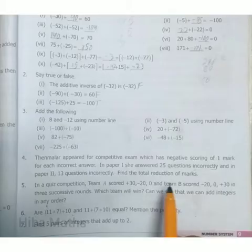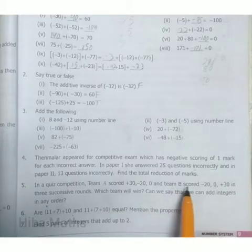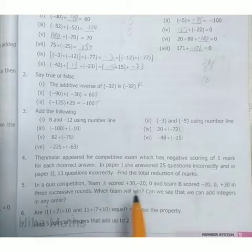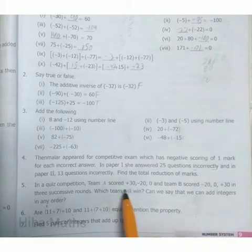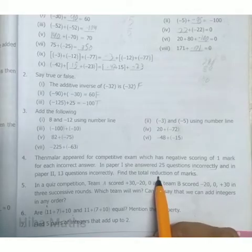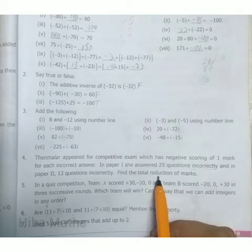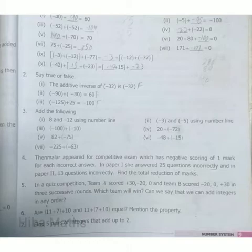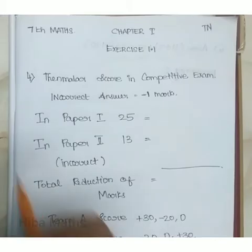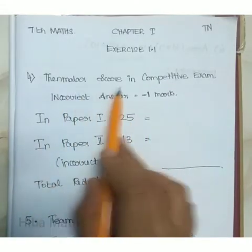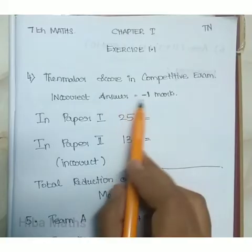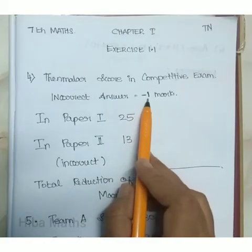In paper 2 she answered 13 questions incorrectly. So how many marks are reduced? Thenmalar's score in competitive exam - incorrect answer is minus 1 mark.